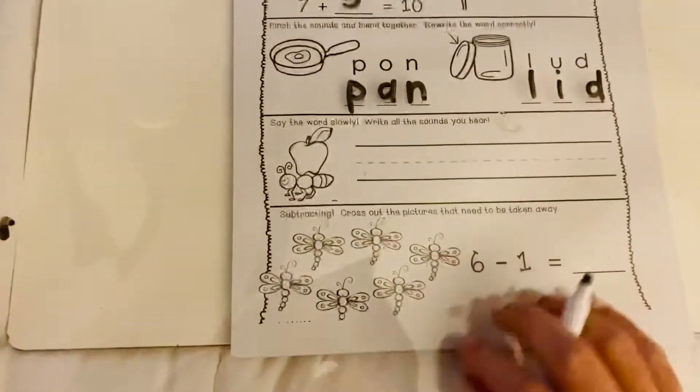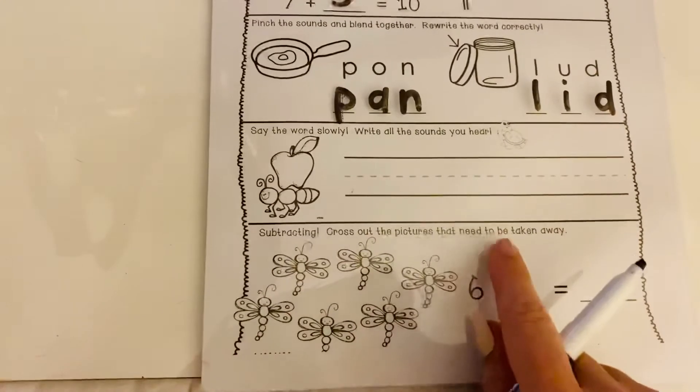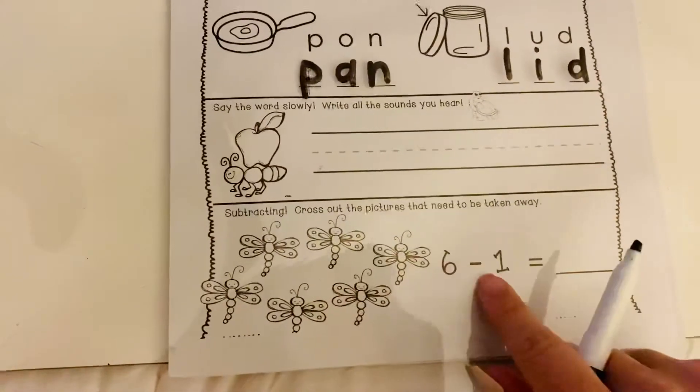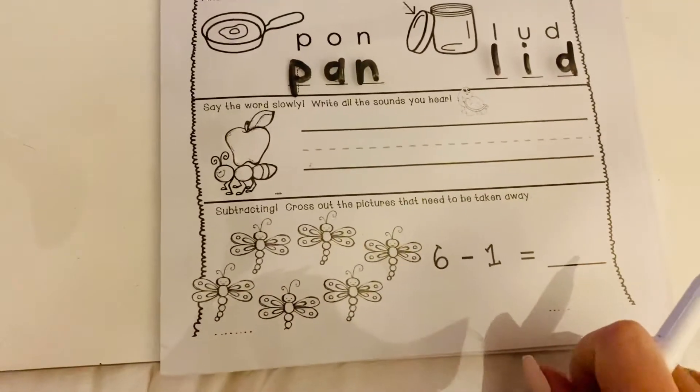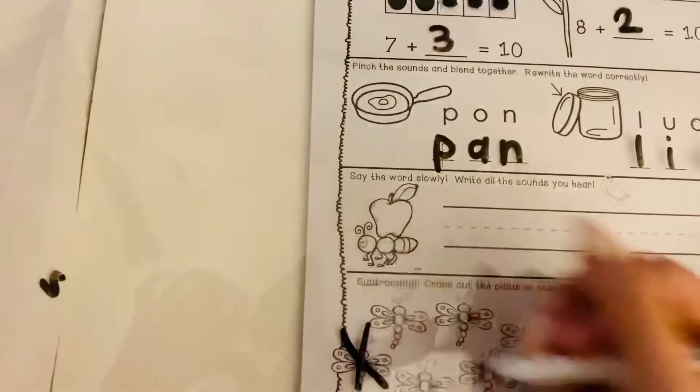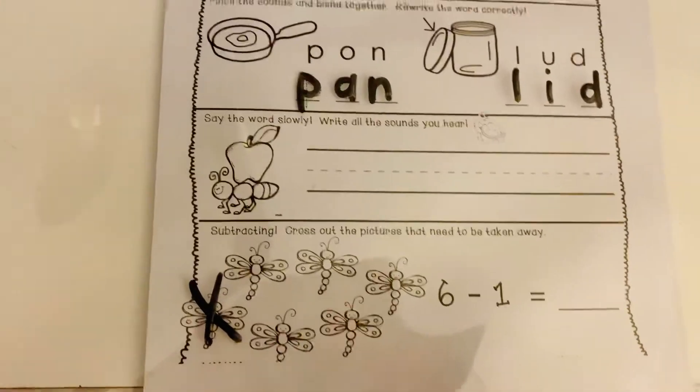And then finally down at the bottom it says, subtracting, cross out the pictures that need to be taken away. So our subtraction sentence right here says, six minus one equals blank. So how many are we going to cross out? It's going to be one. So let's get a big X to one of them and let's count the butterflies that we have. I'm sorry, the dragonflies that we have left.